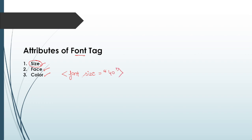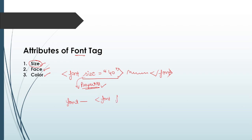Whatever value we write with the font tag is called the attribute or property of that particular tag. We write any text content and then close the font tag. Note that we close the font tag, not the size — because the tag name is font, and size is just its property or attribute. Similarly, we write font face equals whatever value, then close the font tag.